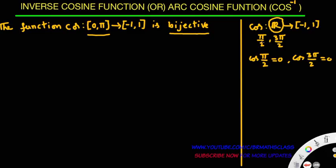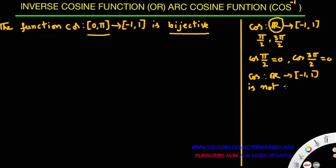Different elements in the domain of cos function are having the same image: cos(π/2) = 0 and cos(3π/2) = 0. So, is this cos function a 1-1 function? Cos from set of all real numbers to closed interval [-1, 1] is not 1-1. This function is not 1-1. If this function is not 1-1, then this is not bijective. So, if we take domain from set of all real numbers to closed interval [-1, 1], then this function is not bijective.